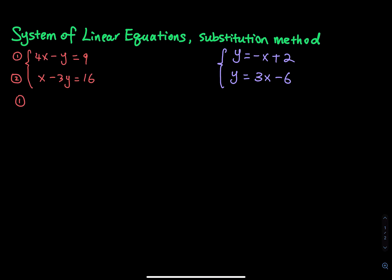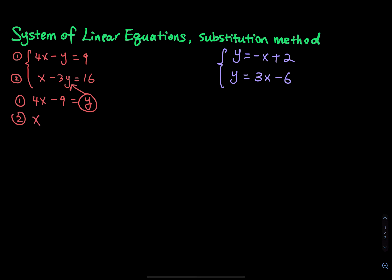For number one, we have 4x minus y equals 9. Let's express y in terms of x: swapping the position of y gives y equals 4x minus 9. Now this is y in terms of x. I am going to substitute this y into the second equation, so the second equation becomes x minus 3 times (4x minus 9) equals 16.